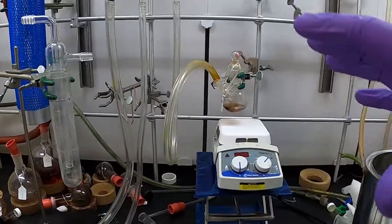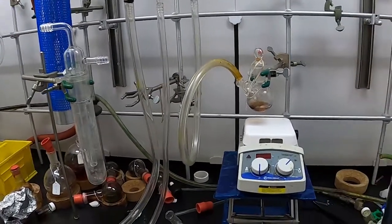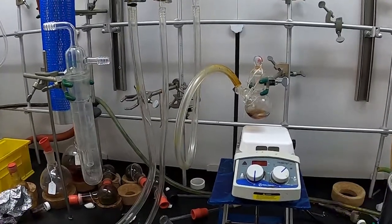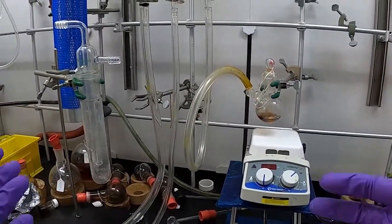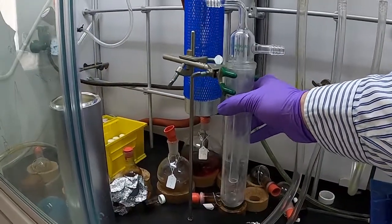Also, as you collect more in your main trap, your vacuum will begin to weaken. So we want to use an external trap so we can still do manipulations with our Schlenk line as we're doing other things.